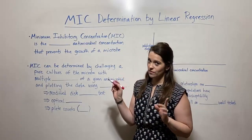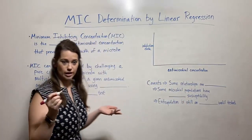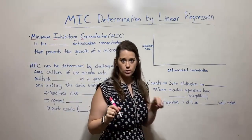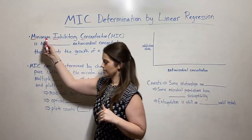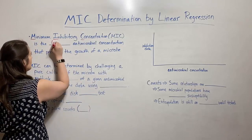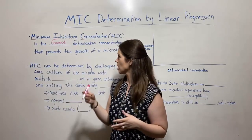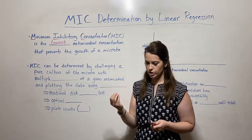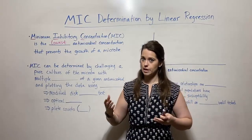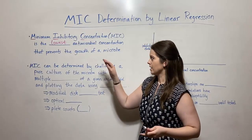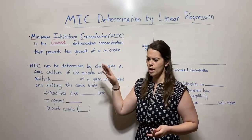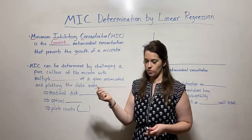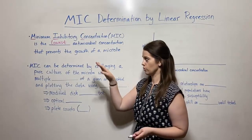Let's revisit what an MIC is. It stands for minimum inhibitory concentration. The minimum inhibitory concentration is the lowest concentration of an antimicrobial compound that will prevent the growth of a microbe. So whatever is that smallest concentration — let's say it's 50 micrograms per milliliter — that prevents 100% of the growth of the microbe. It may or may not kill the microbe, but at least prevents its growth at that concentration. So we're looking for the lowest concentration that prevents 100% of the growth.